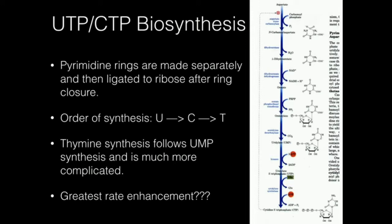Notice that orotate — right here where my mouse is — we have a fully cyclized ring. Then, through the action of a phosphoribosyl transferase, which uses PRPP as the ribose 5-phosphate donor, now that we have this ring already made, we're going to attach it to the ribose. That's going to give us orotidylate.